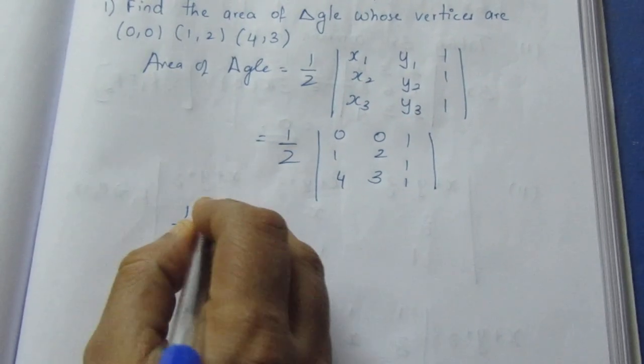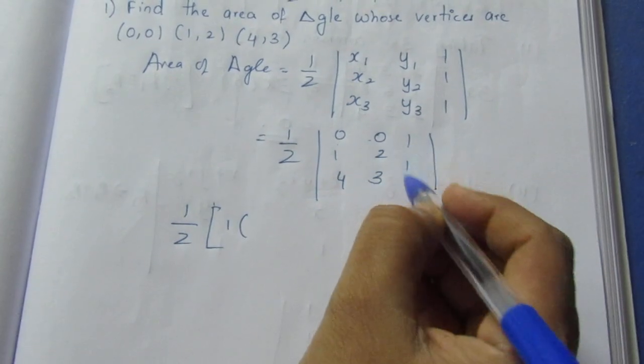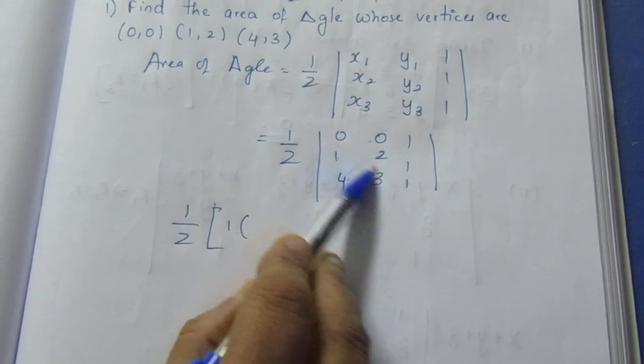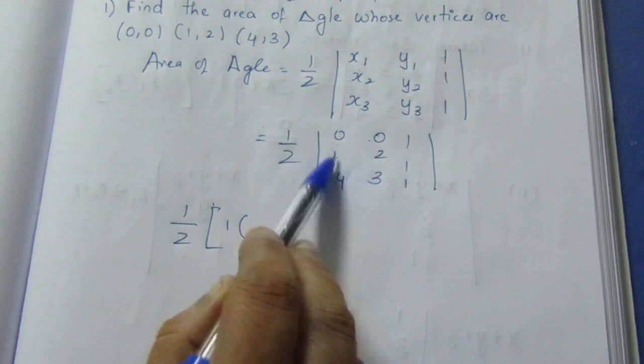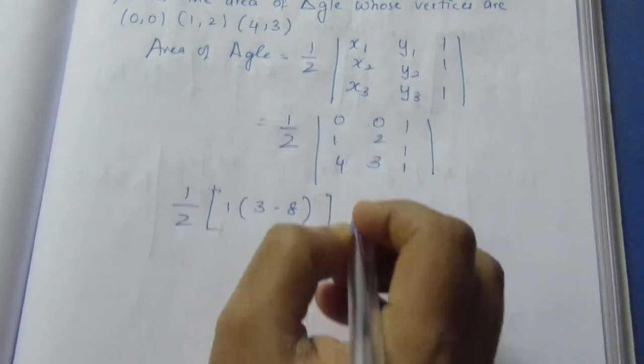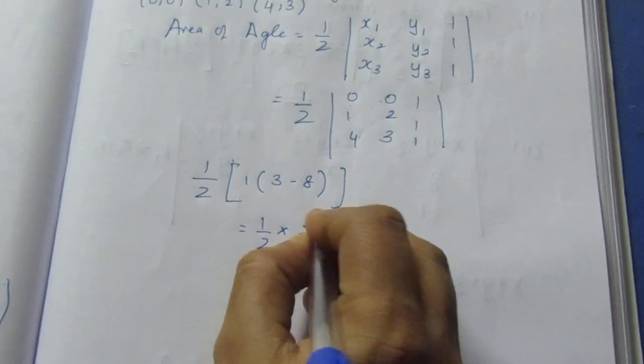So, half into... Now, 1 into... Let's take a row and column. This is cross-multiply. Multiply minus.